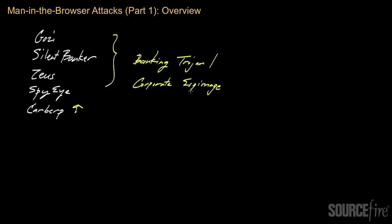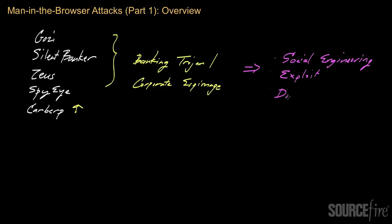A piece of malware that implements a man-in-the-browser attack can infect a system using any one of a number of standard techniques. These include social engineering — tricking the user into getting infected — exploitation of a technical vulnerability on the system, or via a dropper, where an existing piece of malware brings additional malware onto the system. This video series will focus not on how these get onto systems, but on what these attacks entail once the malware has infected the system.